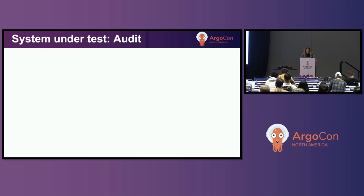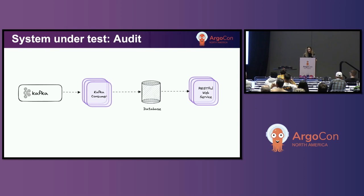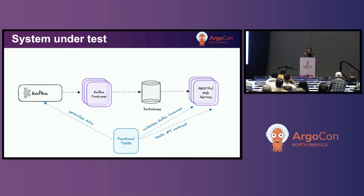I'm going to walk you through a simplified view of a feature we have in Experience Platform called Audit, and we'll use the component implementing these features as our test subject. This is implemented as follows: we have events produced on a Kafka topic which are consumed, processed, and ingested into a data store by a Kafka consumer component. From the data store they are exposed through a RESTful web service. It's important to state that both microservices are both backwards and forwards compatible with each other. Our functional tests generate data on the Kafka topic and validate the entire system's behavior through that RESTful web service. These tests are packaged in a container and run as a Kubernetes job in the CI/CD pipeline.